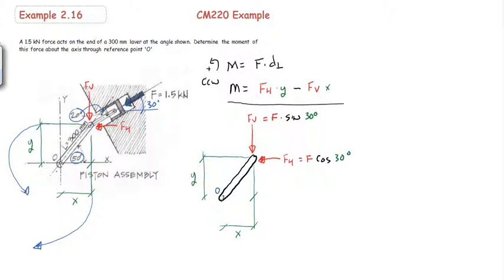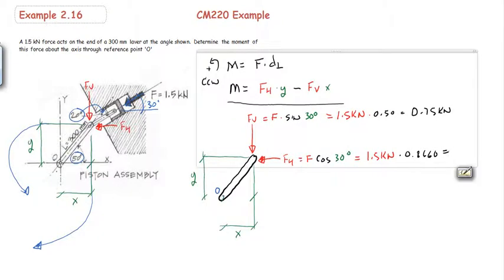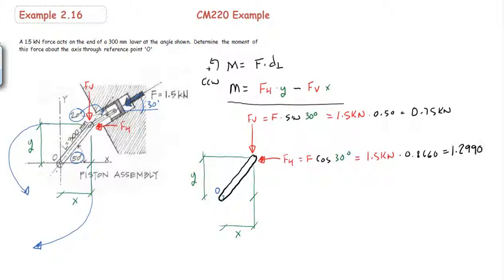Which equals 1.5 kilonewtons times 0.50, which equals 0.75 kilonewton, and the horizontal will be 1.5 kilonewtons times 0.8660, which is equal to 1.2990 kilonewtons.